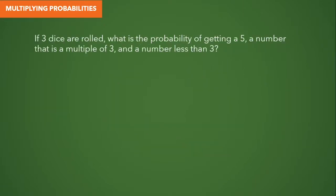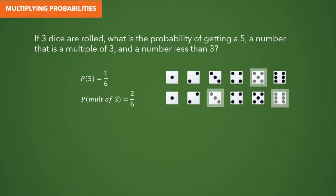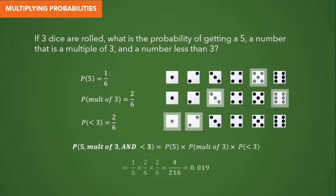Let's try another example. If three dice are rolled, what is the probability of getting a 5, a number that is a multiple of 3, and a number less than 3? The probability of rolling a 5 is 1/6. The probability of rolling a multiple of 3 (3 or 6) is 2/6. The probability of rolling a number less than 3 (1 or 2) is also 2/6. Multiplying these together gives 4/216, or a probability of approximately 0.019.